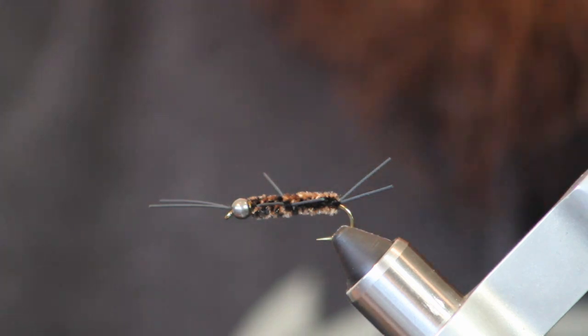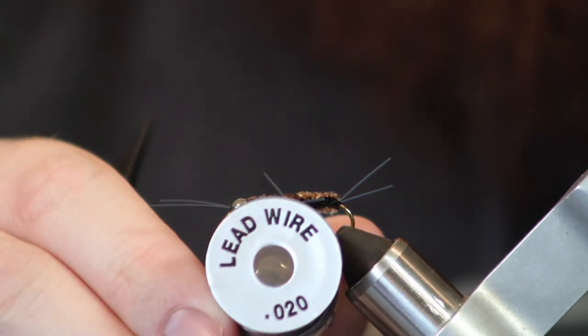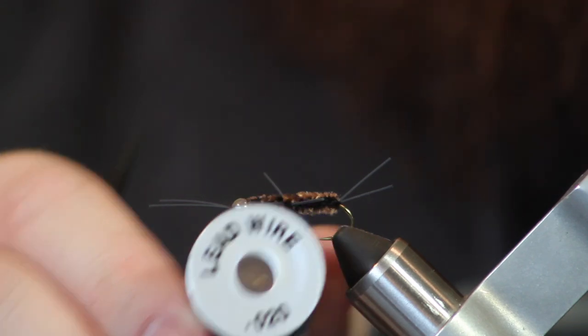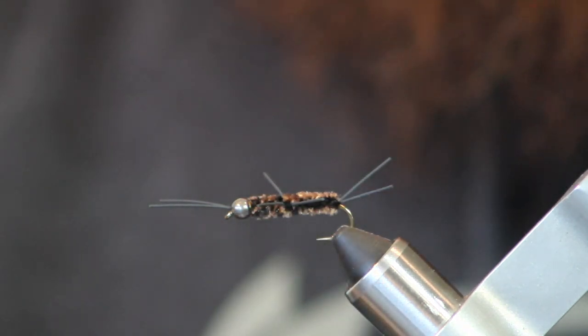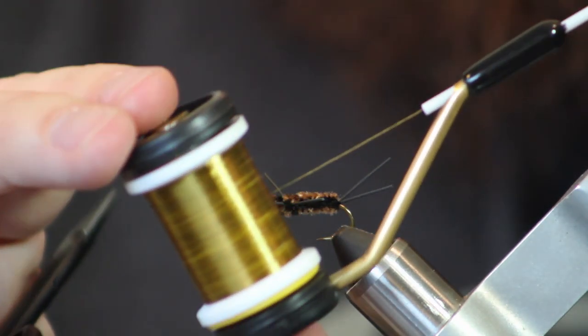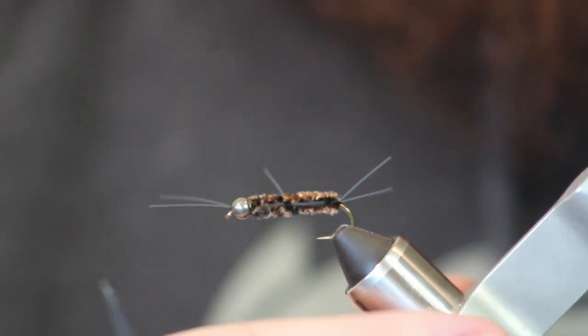Let's see. What else? We've got lead wire that we'll be using for some more weight to get it even heavier. It's a 0.020 lead wire. And then I'm just using some 70 denier olive TMC. It tends to be the thread I use all the time.